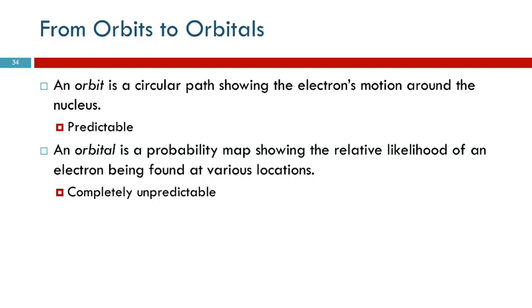Okay, so understanding the difference between orbits and orbitals. An orbit is a circular path that shows the electron's motion around the nucleus, like planets around the sun. We can understand that. It's predictable.